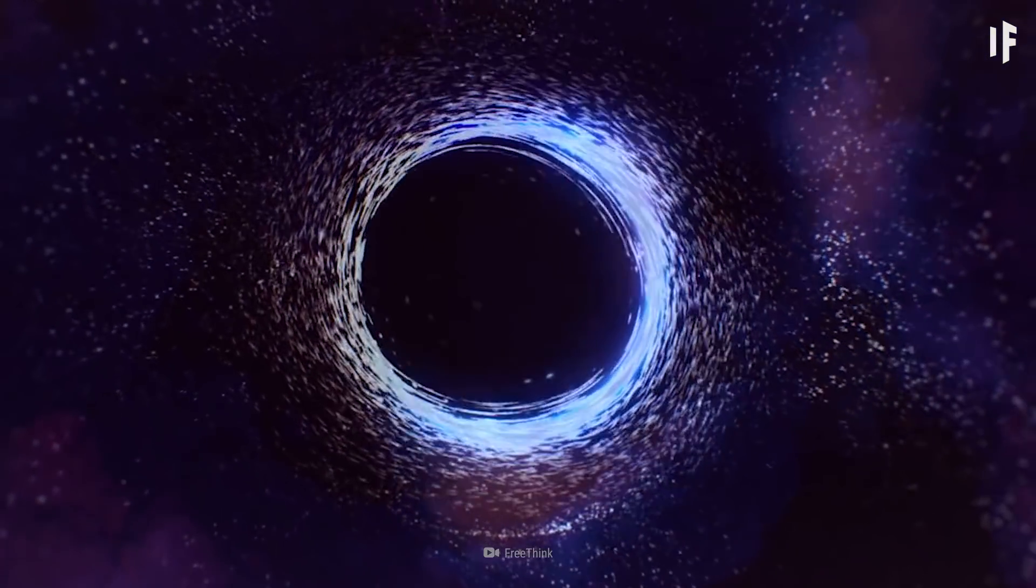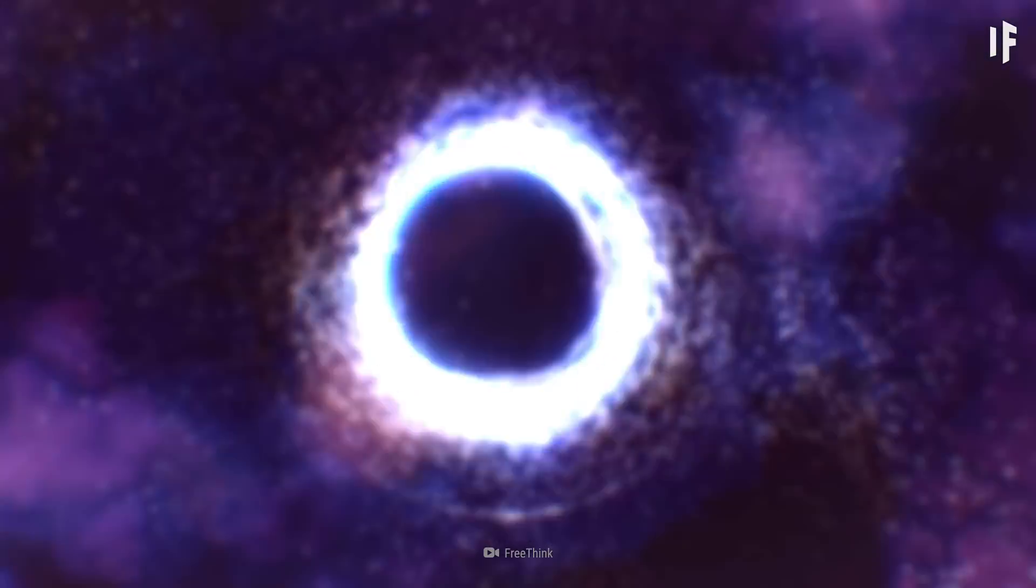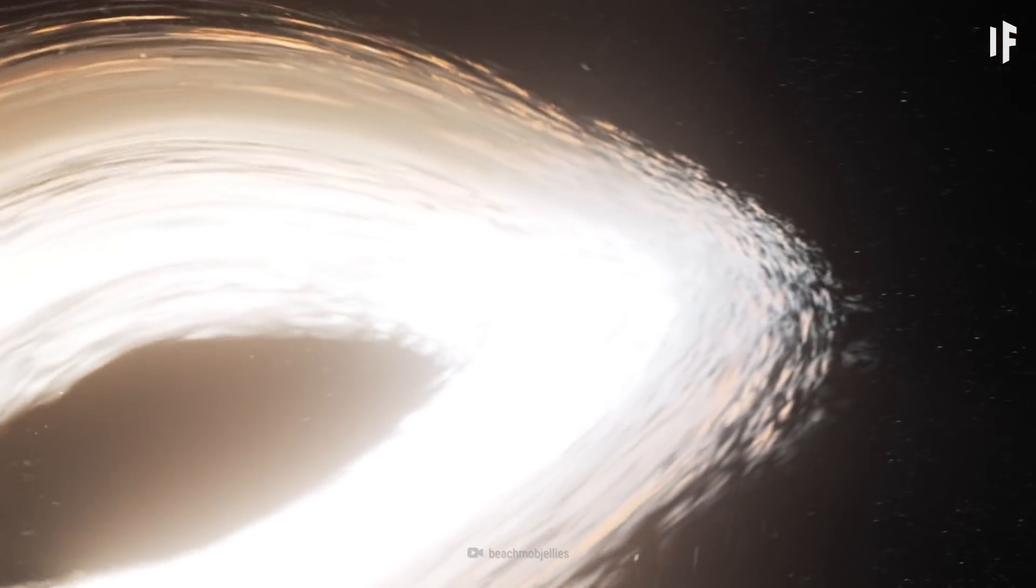It's a ring made up of light particles called photons that have orbited the black hole two, three or even more times before escaping.